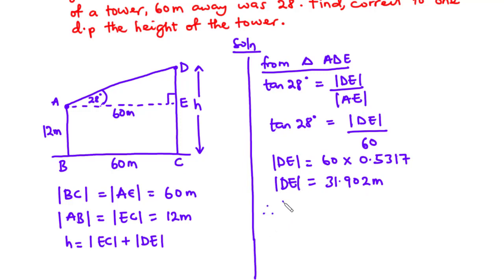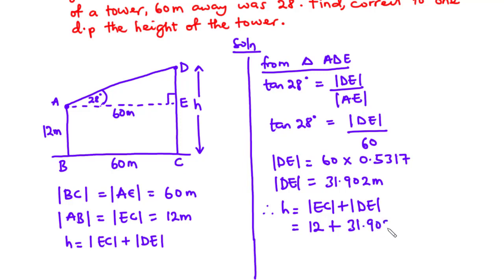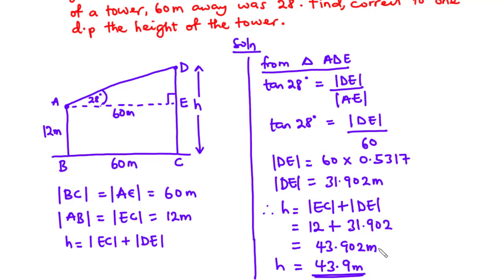Therefore, the height of the tower, which is EC plus DE, is equal to 12 plus 31.902. So when you add the two, you have 43.902 meters. Now since we are asked to leave our answer to one decimal place, the height of the tower is 43.9 meters.